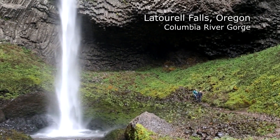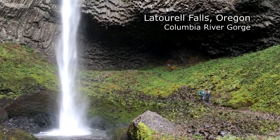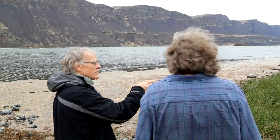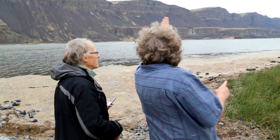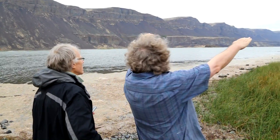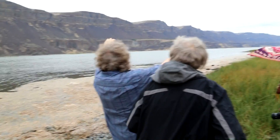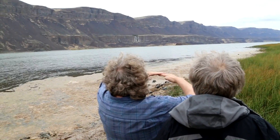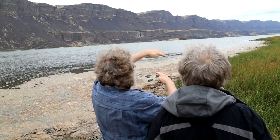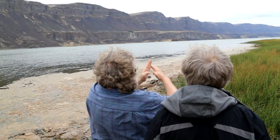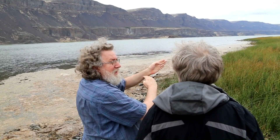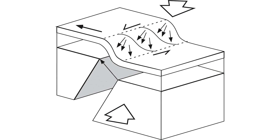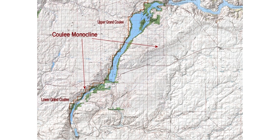The reason Grand Coulee is here rather than somewhere else is because there was a zone of weakness. The cliffs on the west are higher than the cliffs on the east. The pre-flood geography had a dip from west to east — we're actually standing in a monocline, which is a single fold upwards in the bedrock. As it folds up, it cracks and fractures along that fold line, creating a zone of weakness. As the water came across, I showed you where the upper coulee is actually coming at an angle to the monocline — as soon as it hits the monocline, it starts following it.